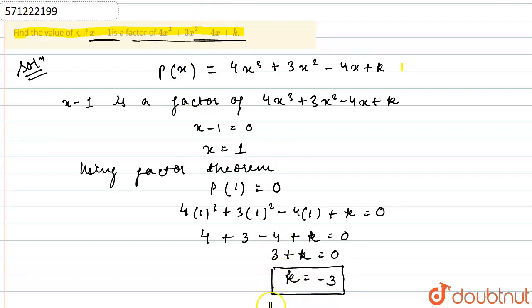So this is how we get the value of k, which equals minus 3. Thanks for watching.